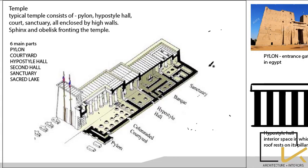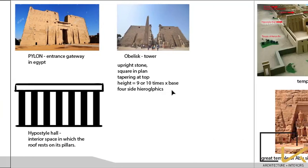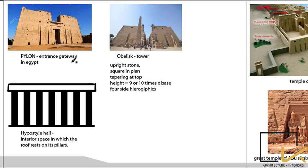After the hypostyle hall comes the second hall, also known as the bark hall. The fifth element is the sanctuary, and the sixth is the sacred lake. In front of the pylon there is an upright tower known as the obelisk.